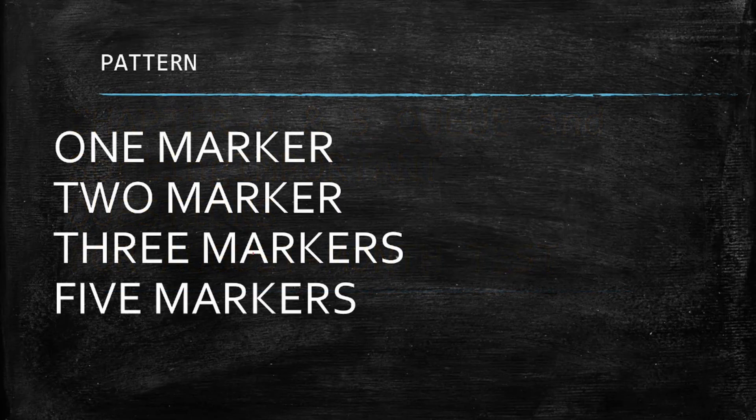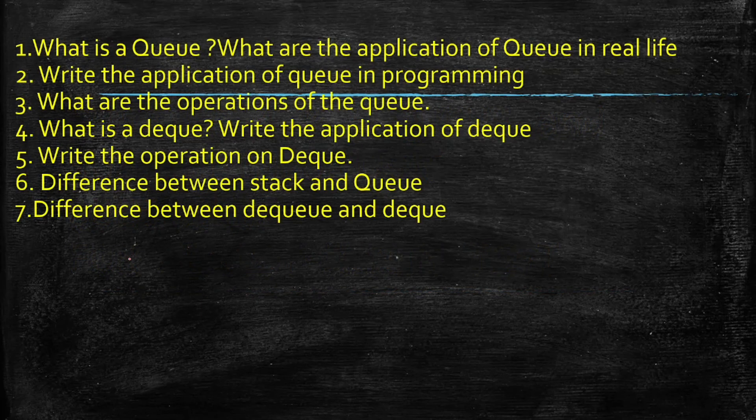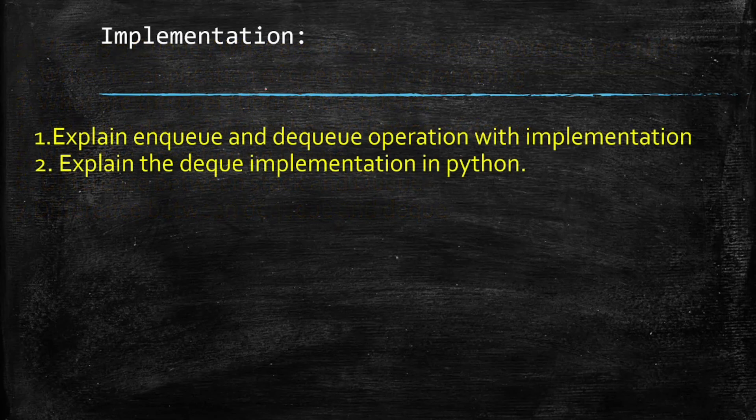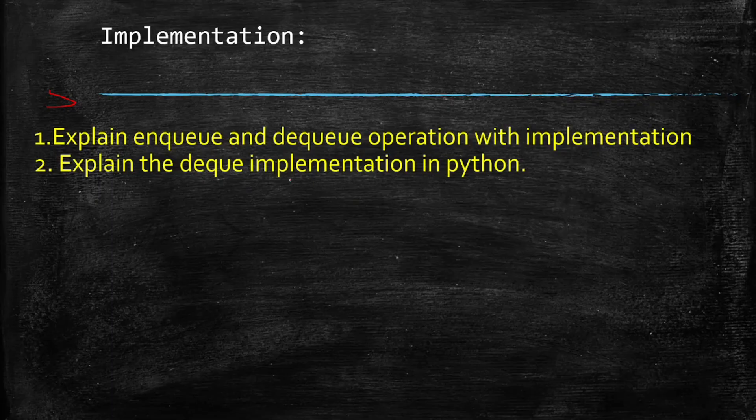Now we are going to see Chapter 4. What are the important questions? These two chapters will have all types of questions like 1 marker, fill in the blanks, 2 marker, 3 markers and 5 markers. And implementation, you may expect 5 markers like enqueue and dequeue operation with implementation and explain the deque implementation in Python. These two, better you can check my lesson. Definitely I have explained very clearly in that with the answer.